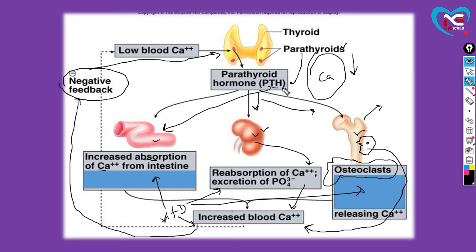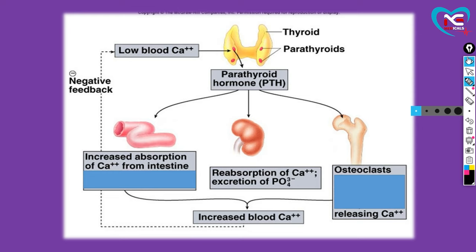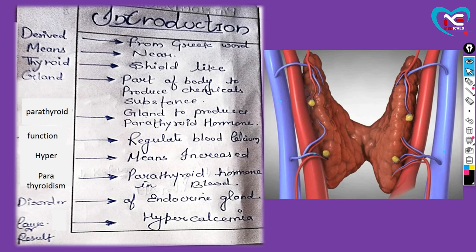Toh ab samajh gaye, parathyroid hormone kya kar raha hai? Small intestine ko bol raha hai zyada calcium absorb karo, kidney ko bol raha hai zyada calcium absorb karo, osteoclast jo ki bone ko purani bone ko engulf karke nayi bone banate hain - us mein jo calcium hota hai woh blood mein chala jaata hai. Is tarah se normally function chal raha hota hai. Saath hi saath blood mein complete calcium aane ke baad vitamin D kya karta hai ki ek negative message bhejta hai parathyroid hormone ko ya gland ko aur parathyroid hormone ka secretion uska kam ho jaata hai.